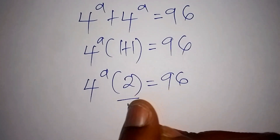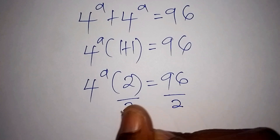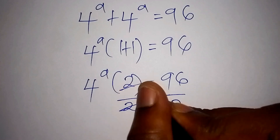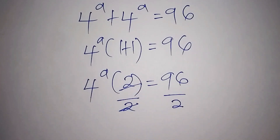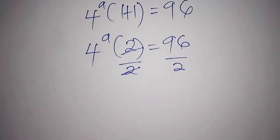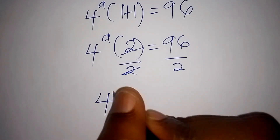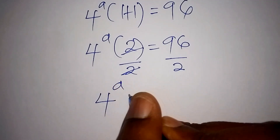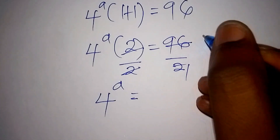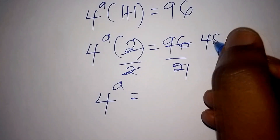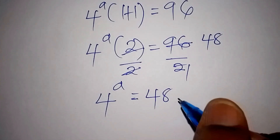From there we shall divide both sides by 2. So 2 divided by 2 cancels, giving us 4 to the power of a. Since 2 goes into 96 forty-eight times, we now have 4 to the power of a is equals to 48.